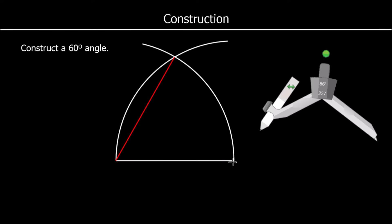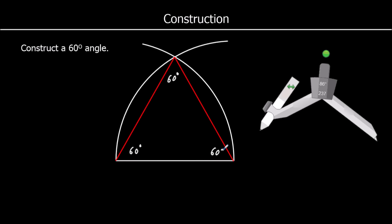If we wanted to draw a full equilateral triangle we would join all the corners, but we only need one angle. Each angle in this triangle will be 60 degrees, because every angle in an equilateral triangle is 60 degrees. So we've got a triangle with equal side lengths, which means we've got three 60-degree angles.